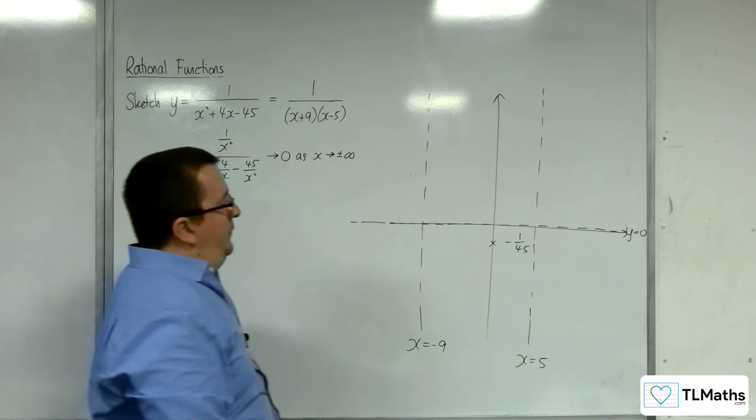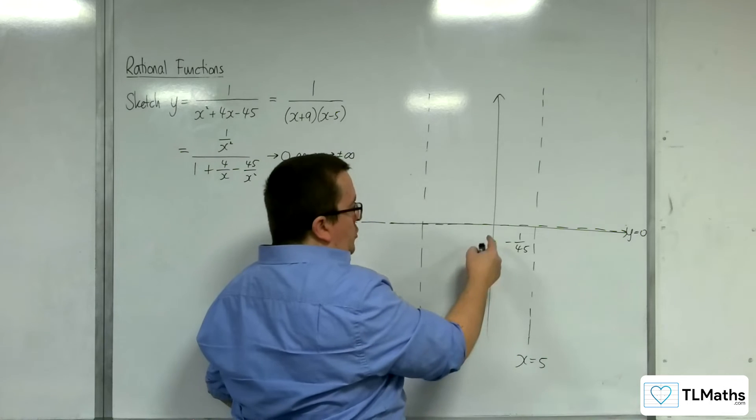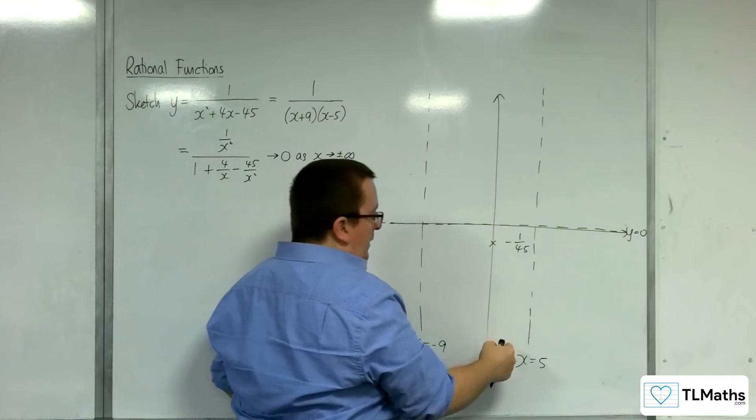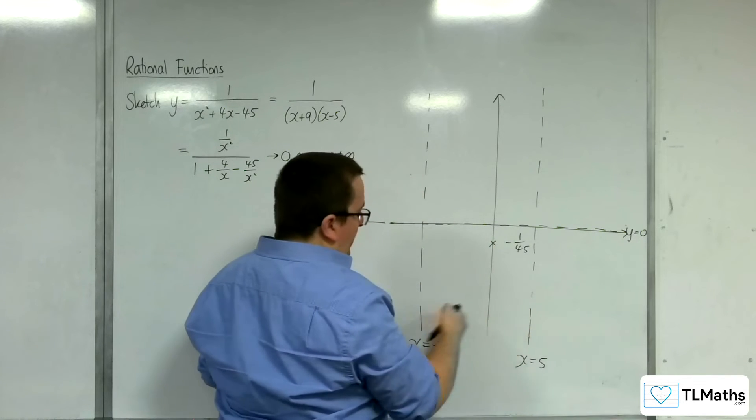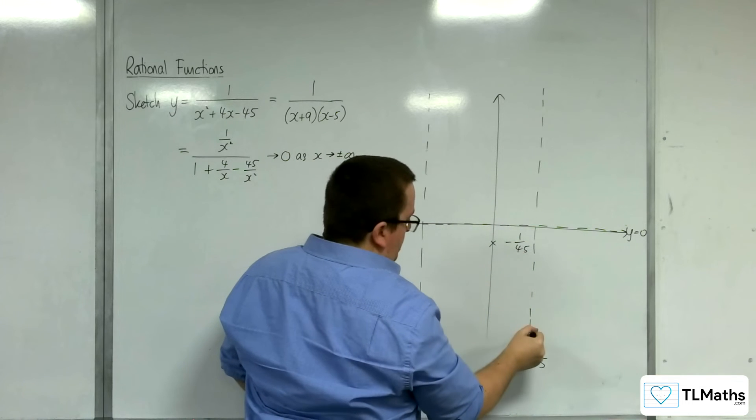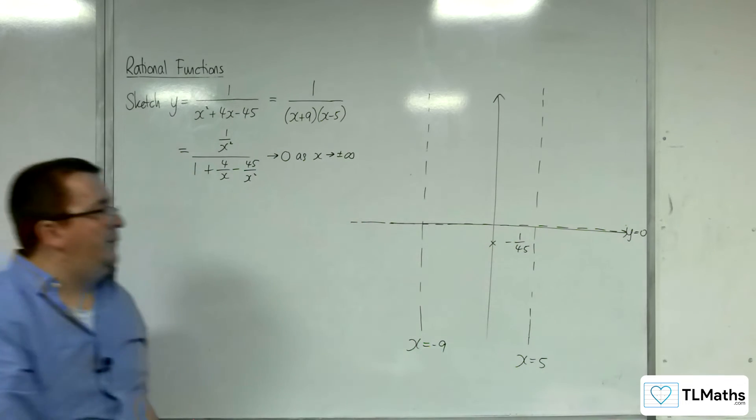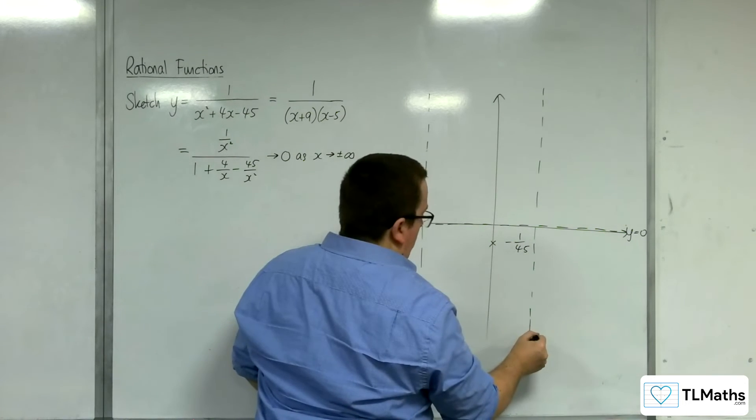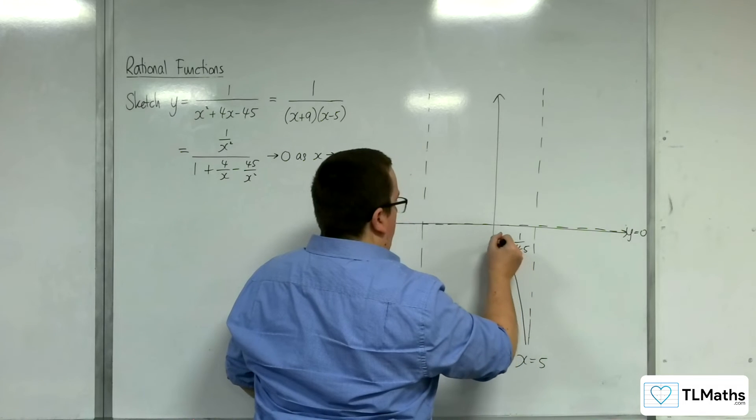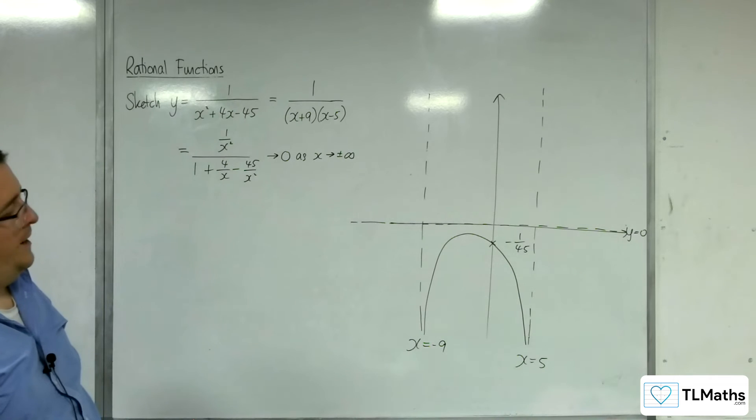Right, so what must this curve be doing? Well, in order to cross through minus 1 over 45 on the y-axis and to tend towards these two asymptotes and not be allowed to cross the y equals 0 line, because that's the x-axis and we know it doesn't cross the x-axis, it must be coming up like this through that point and then do something like that.